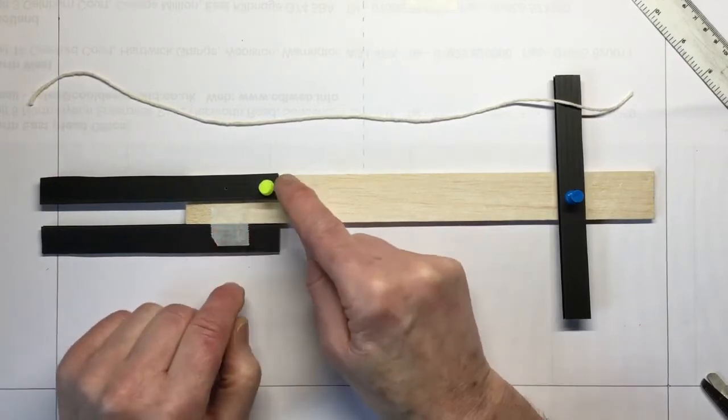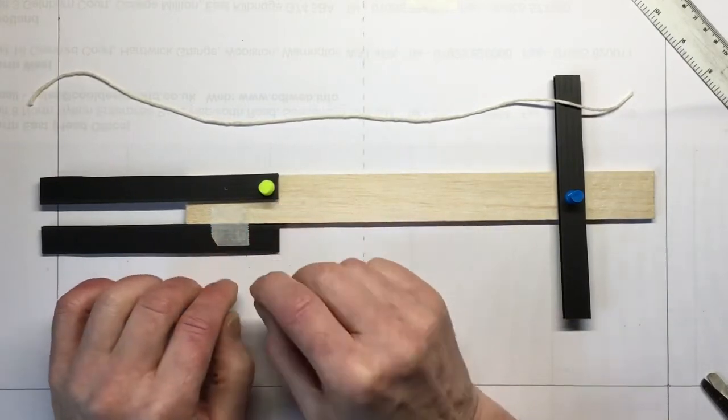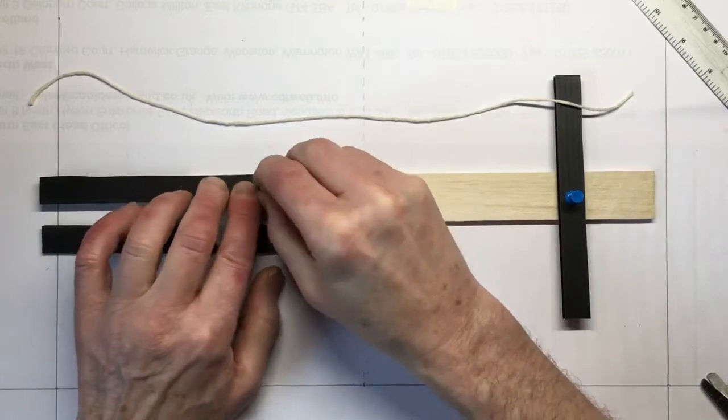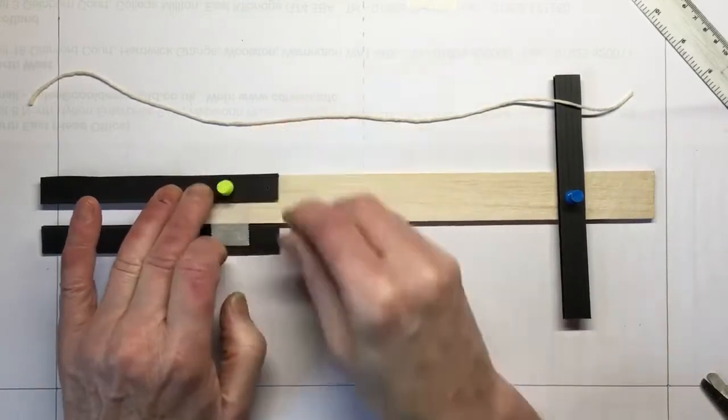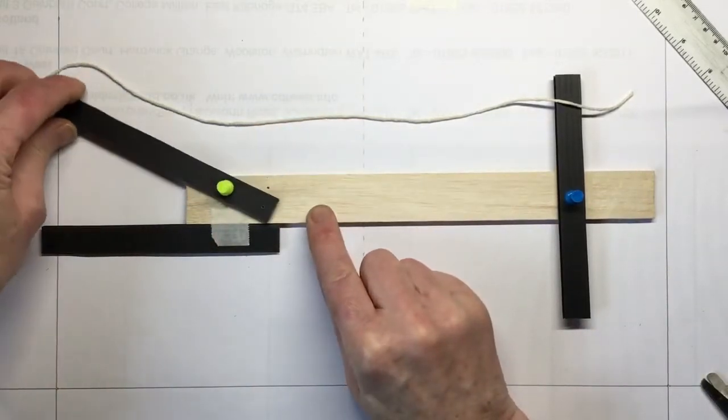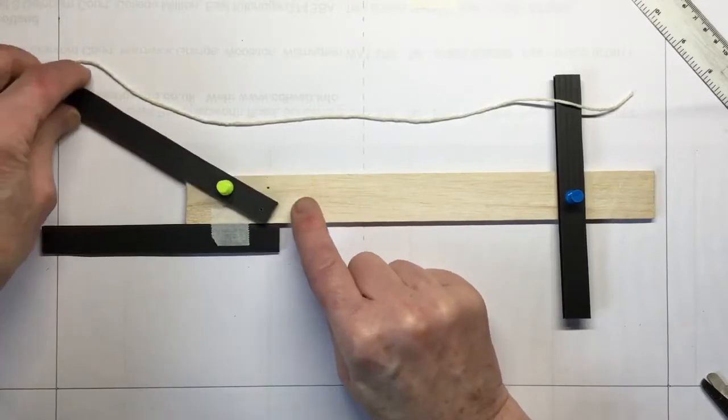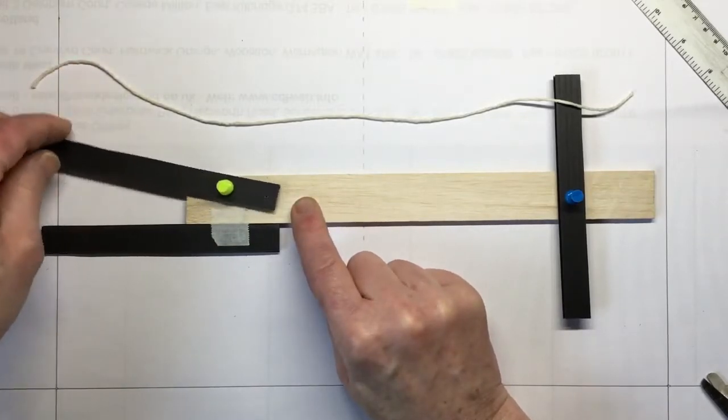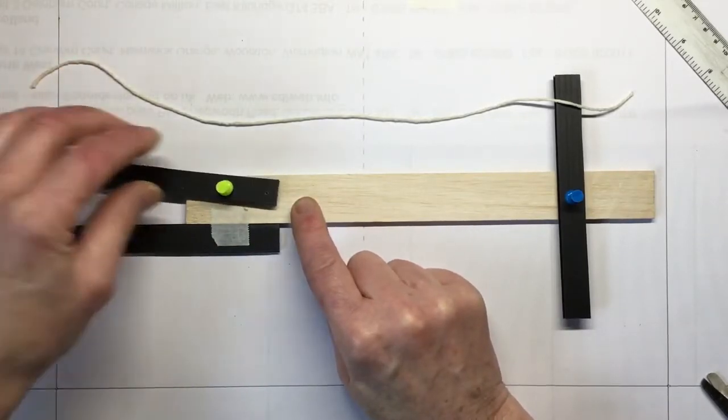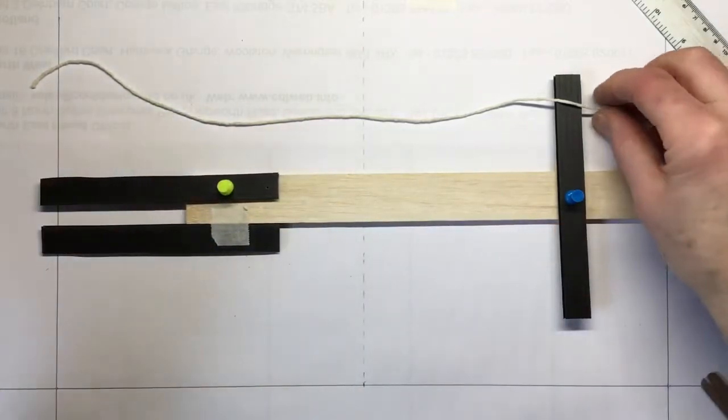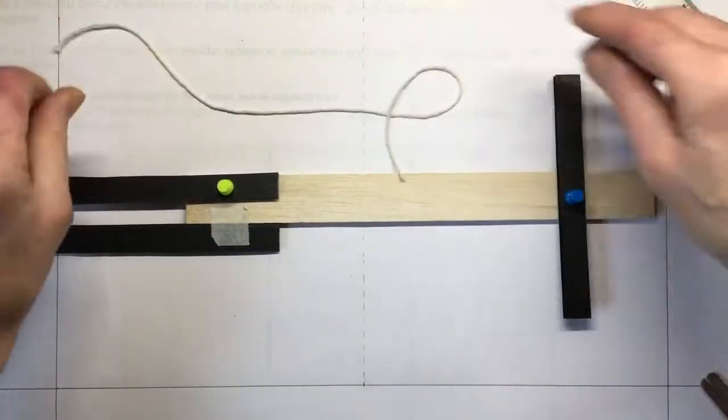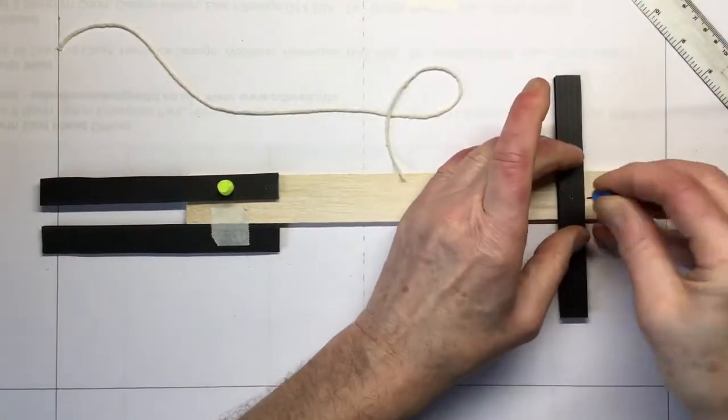But then that stops you from using that end if you change your idea. So I thought, what's the difference? Let's just put it in there like that. Now when the jaw opens we've got this movement at that end - maybe that could be useful to us later. It gives us more options.